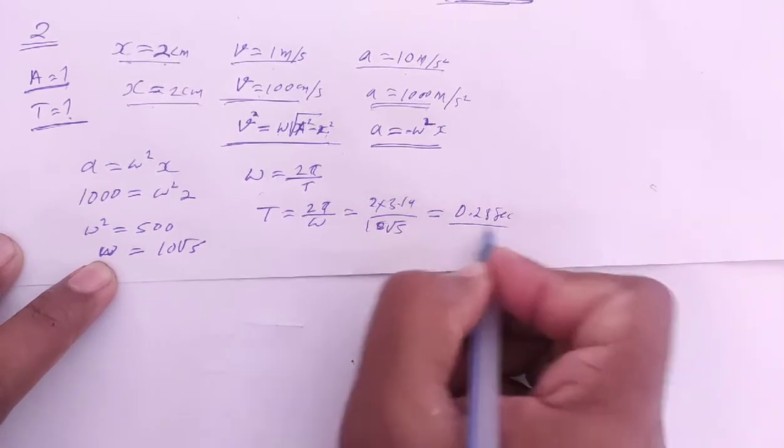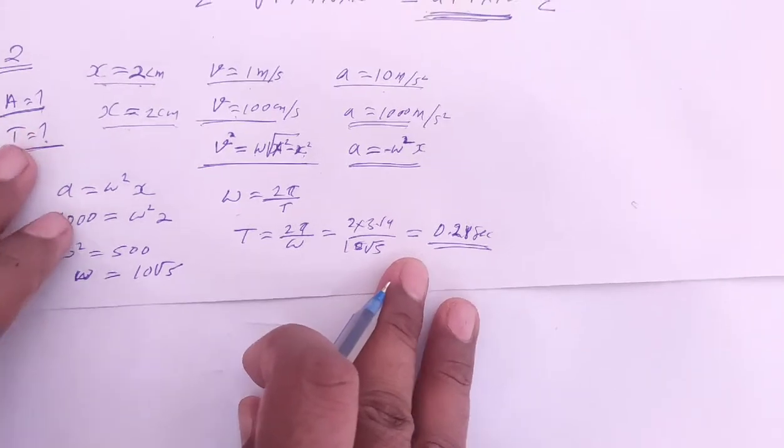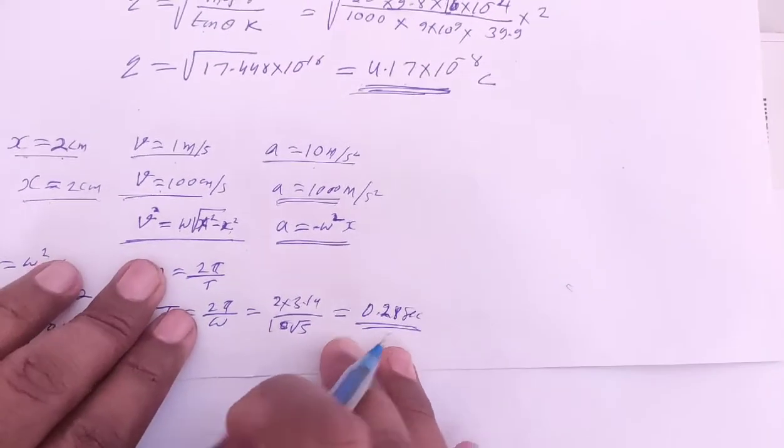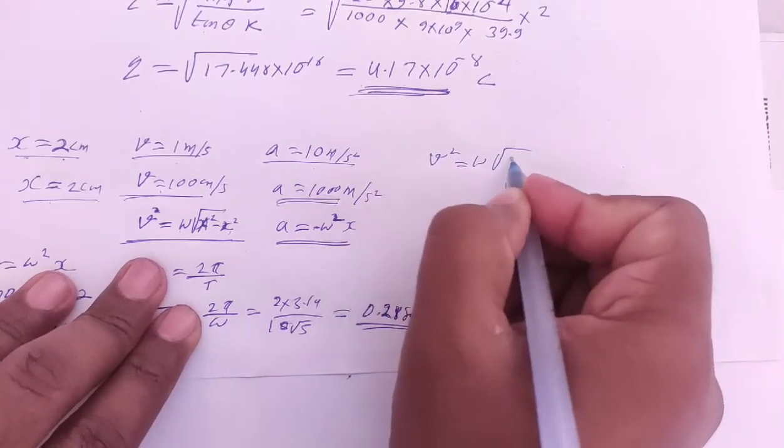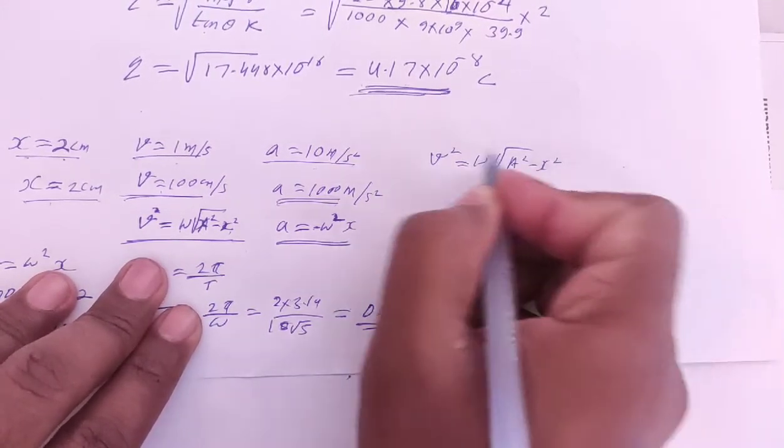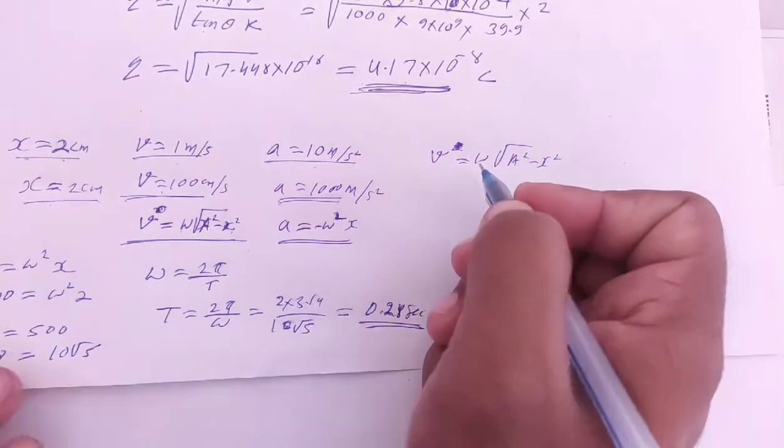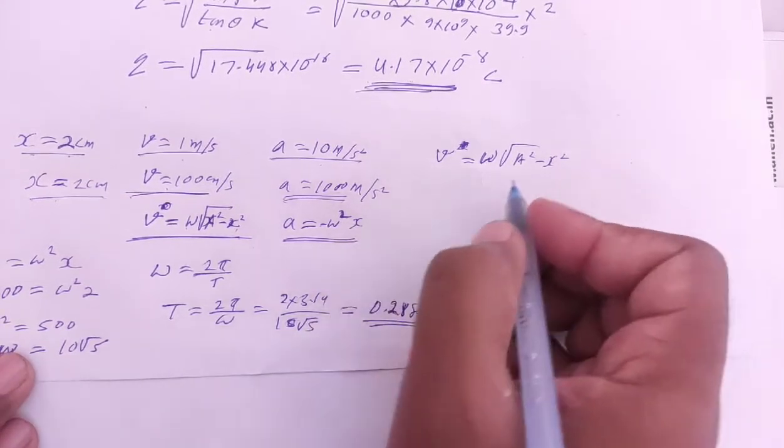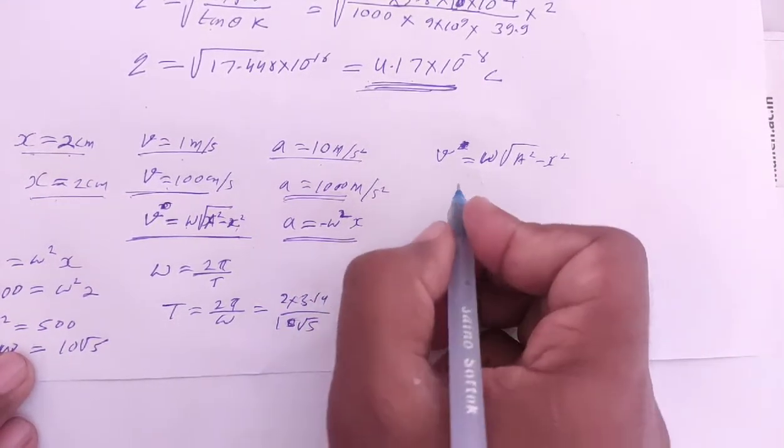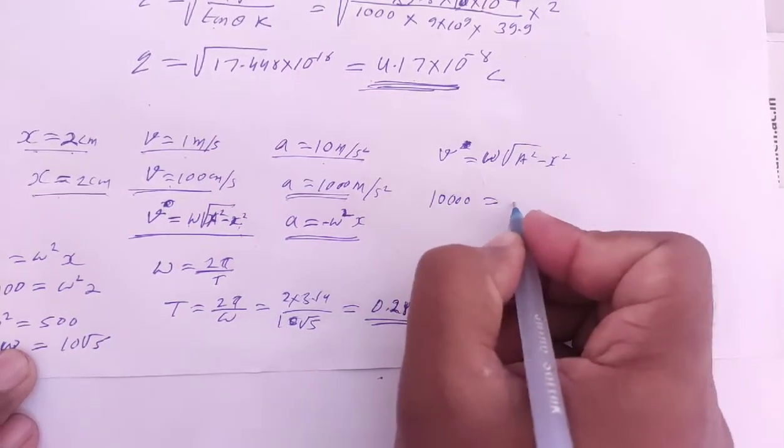Next part is finding the amplitude. Use the velocity formula: velocity squared equals ω² times (A² - x²).